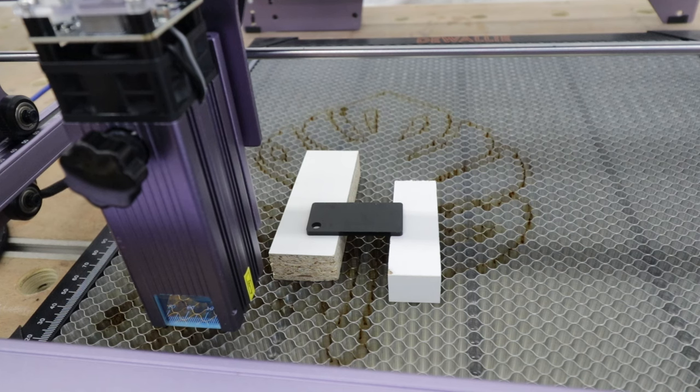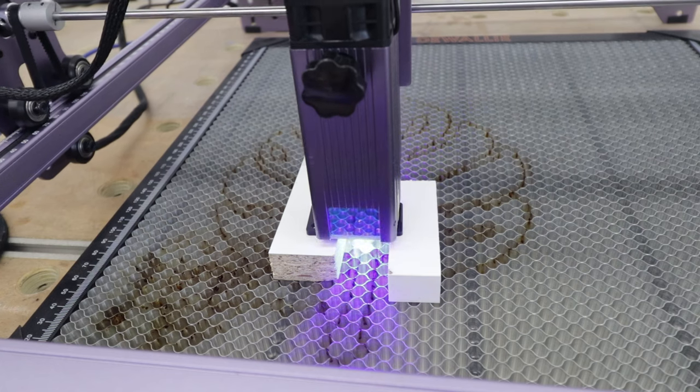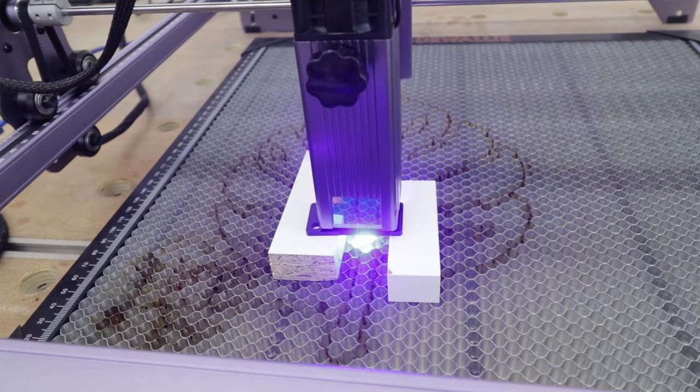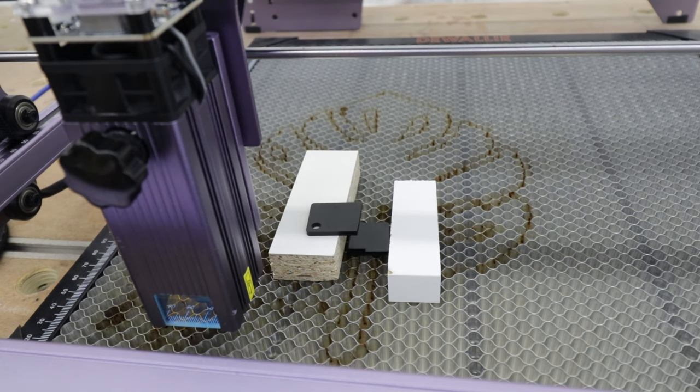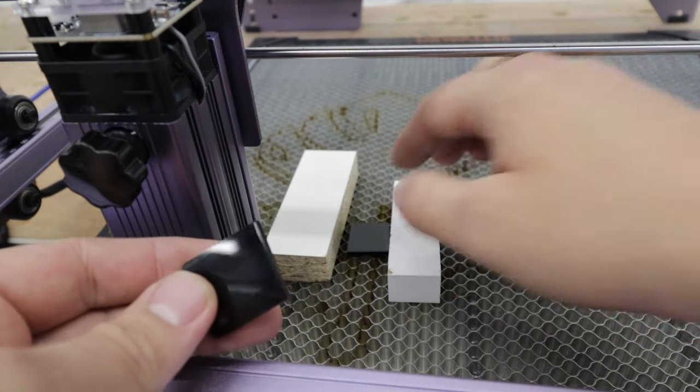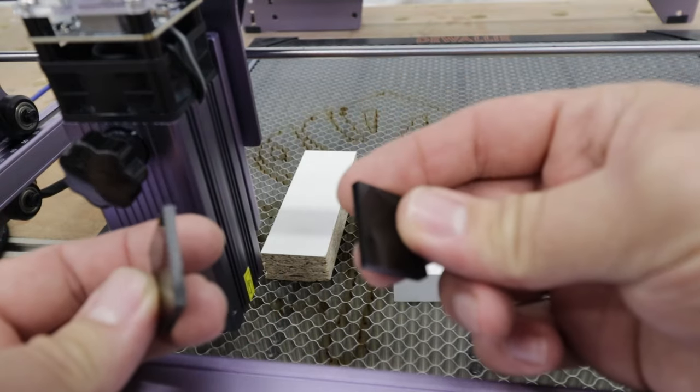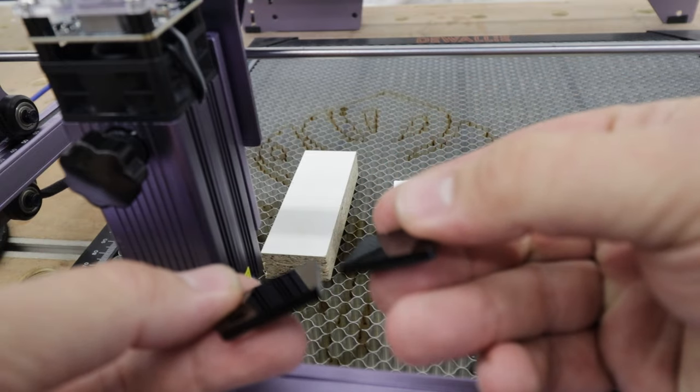In this test we're going to be cutting acrylic sheet. As you can see it's black and it's 3 millimeters thickness. 100% power, 100 millimeters per minute. And as you can see it managed to cut it through in only two passes. And very high quality of the cut as well.